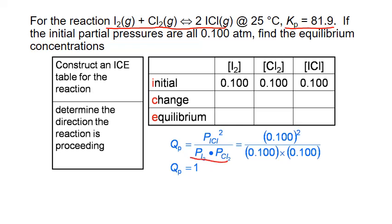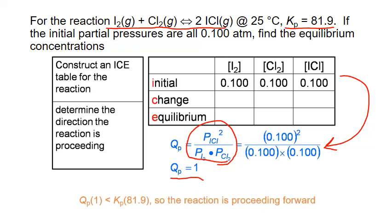For Q sub P, we use the same equilibrium expression as for K: the partial pressure of our product squared divided by the partial pressures of our reactants. Substituting in the initial concentrations gives Q sub P equal to 1, which is less than our equilibrium constant of 81.9. So the reaction proceeds forward — we increase product concentration and decrease reactant concentration, giving negatives on the reactant change line and a plus on the product change line.